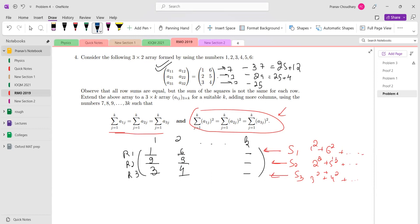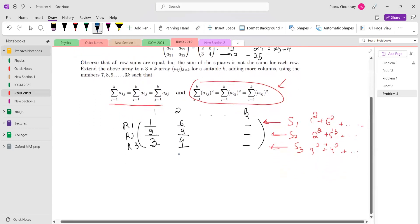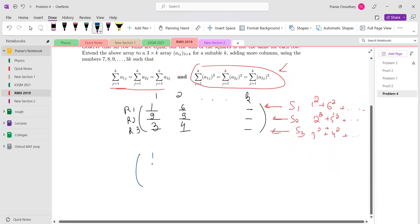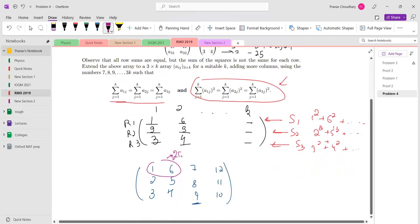One idea can be: we are given 1, 2, 3, 4, 5, 6—what if we just continue this with 7, 8, 9, 10, 11, 12? Let's see what happens when we have these elements. This was summing up to 25 plus 12, this was 25 plus 4, and this was 25.